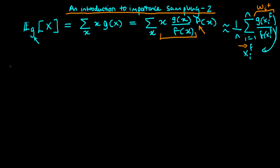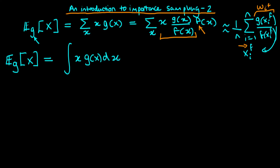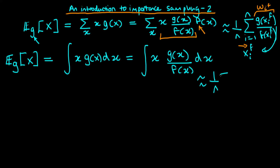Whilst the previous discussion concerned discrete distributions, the same holds for continuous ones. If I want to work out the expected value under some continuous density g of a continuous random variable x, I integrate x times g(x) dx over all the range of x. Using the same trick, except now with an integral sign and a dx, we get x times g(x) over f(x) dx. As before, we can approximate this as 1 over n times the sum from i equals 1 to n of our importance weights w_i^f times x_i^f.